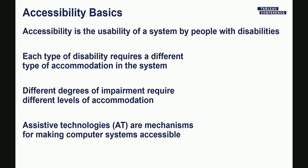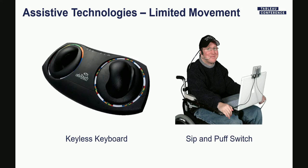When we talk about computing systems, we talk about assistive technology, or AT — technology and mechanisms that make computer systems more accessible. For people with limited movement, on the left is a picture of what's called a keyless keyboard, designed to help someone who has some motor control but not fine-grained motor control still manipulate a computer through its keyboard interface using two large switches. On the right, the gentleman is using a sip-and-puff switch, which allows him to manipulate the keyboard by either sipping or puffing on the tube in his mouth.